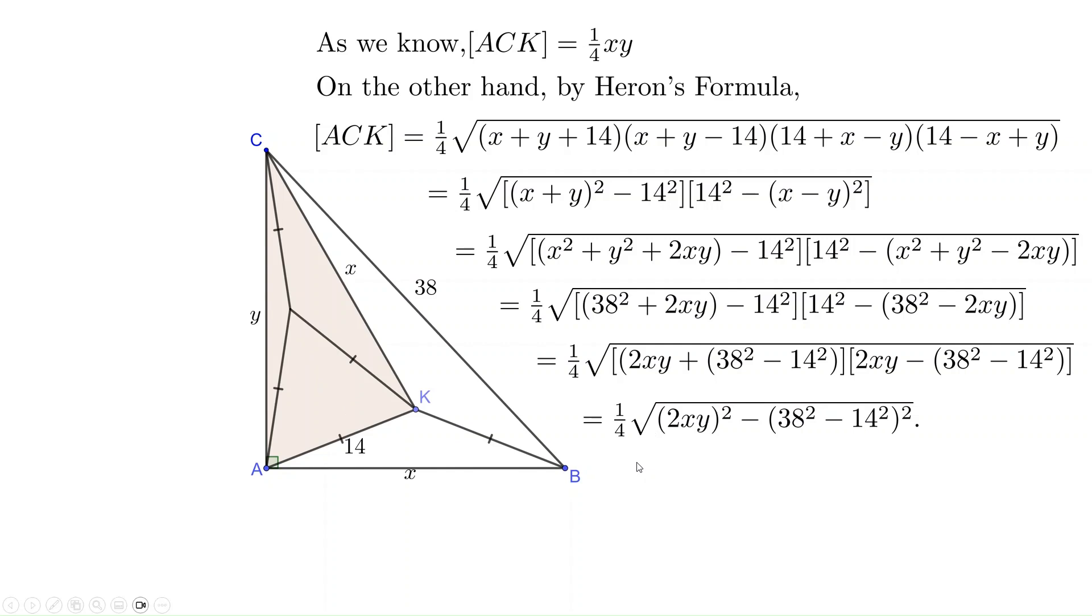Unless absolutely necessary, don't expand the square of these big numbers. Now we have 2 expressions for the area of triangle ACK. One, 1/4 times xy, the other 1/4 times square root. So xy equals the square root. Square both sides and rearrange the term. We have 3 times xy² equals (38² - 14²)². Taking square roots and only take the positive values, we have √3 times xy equals 38² - 14².